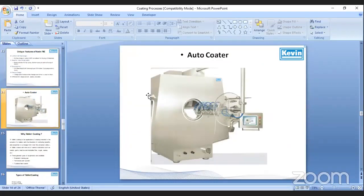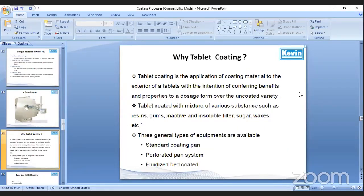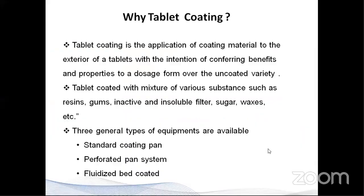Now we go on to auto-coaters which we have developed. First, I'll go through why tablet coating. Tablet coating is the application of a coating material to the exterior of tablets with the intention of conferring benefits and properties to a dosage form over the uncoated variety. Tablets are coated with a mixture of various substances such as resins, gums, inactive and insoluble fillers, sugars, waxes, etc. There are three types of equipment available for coating: standard conventional coating pans, perforated pan systems, which are mostly used in auto-coaters, and fluidized bed coating systems.